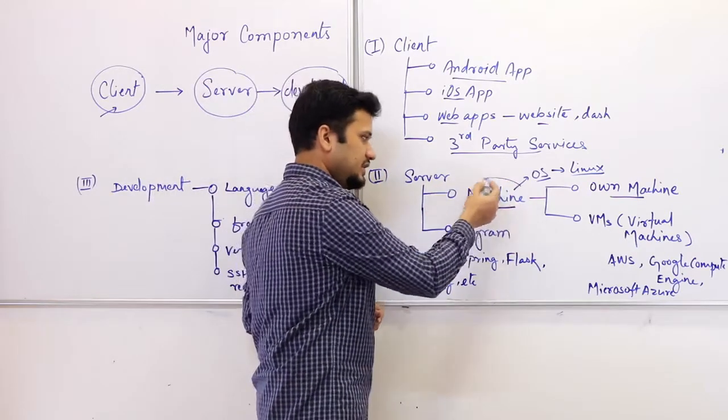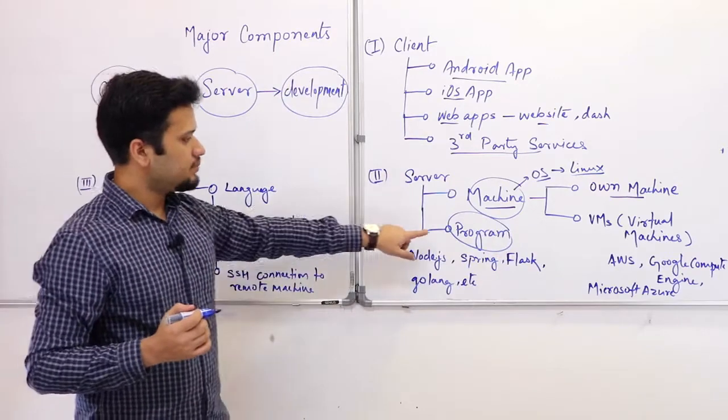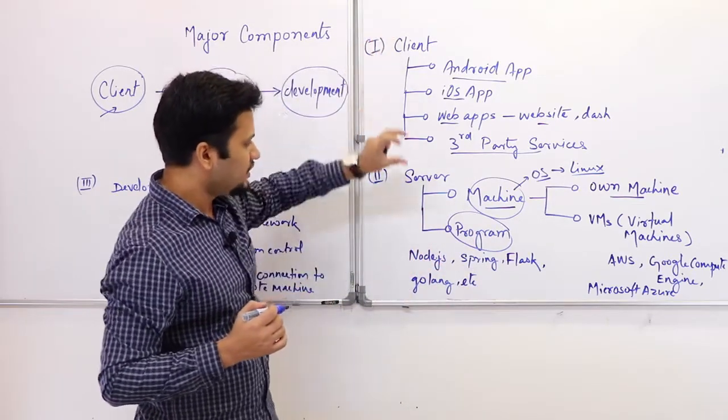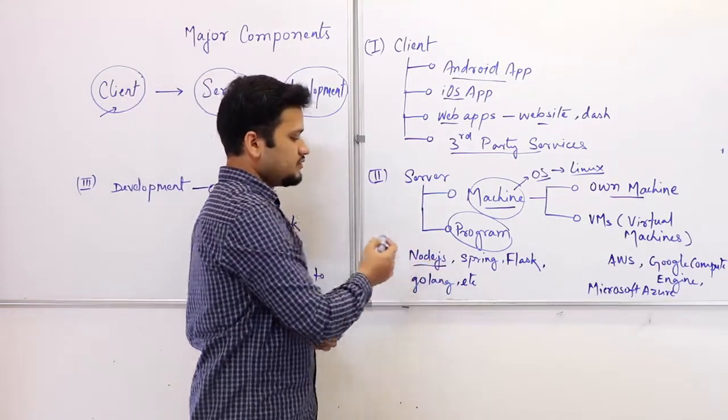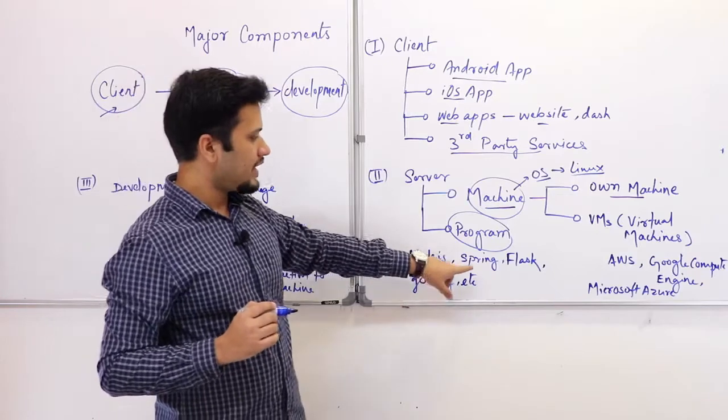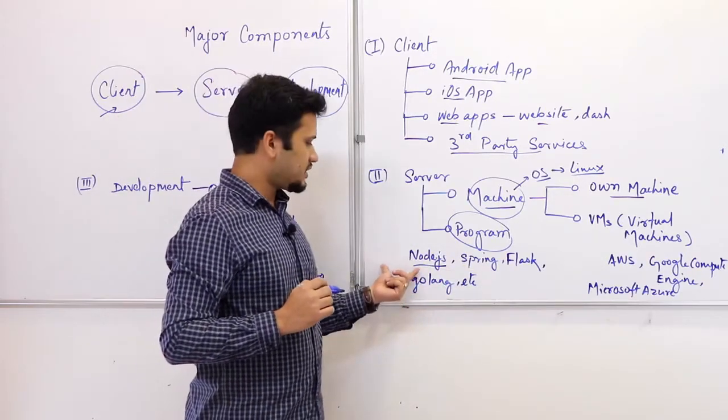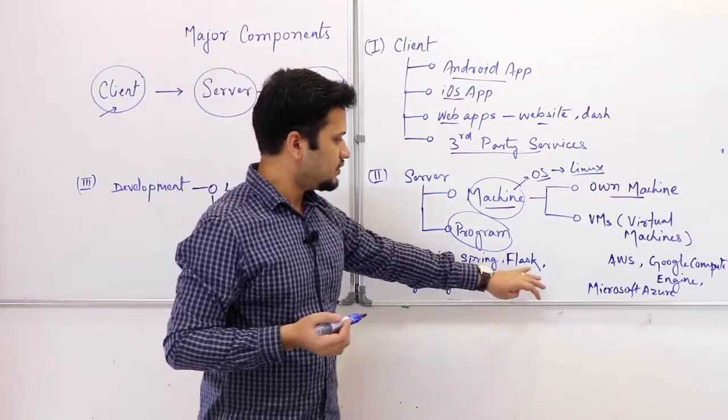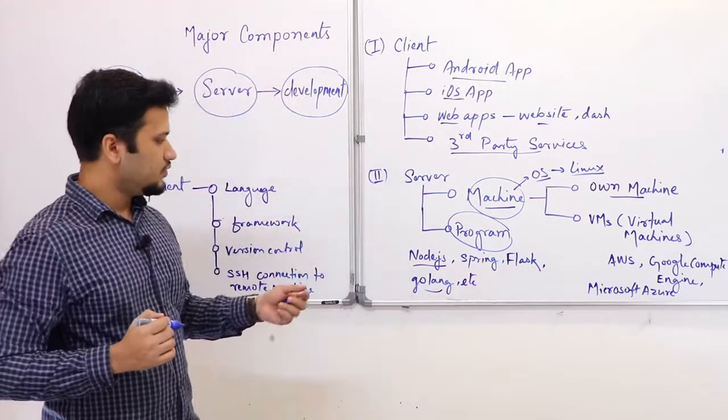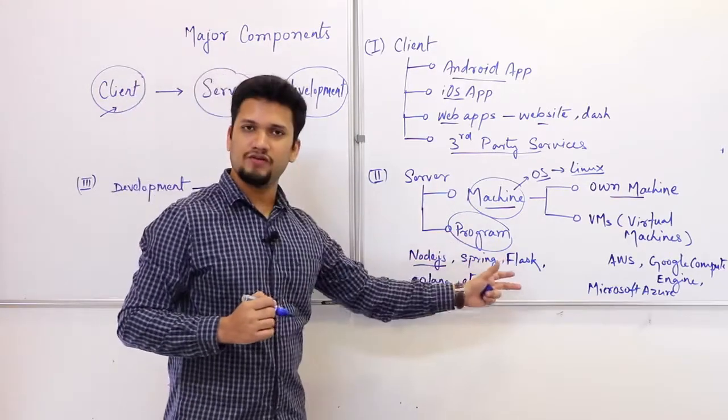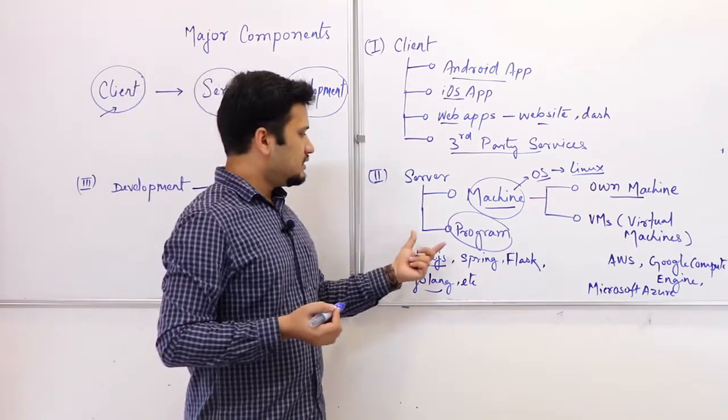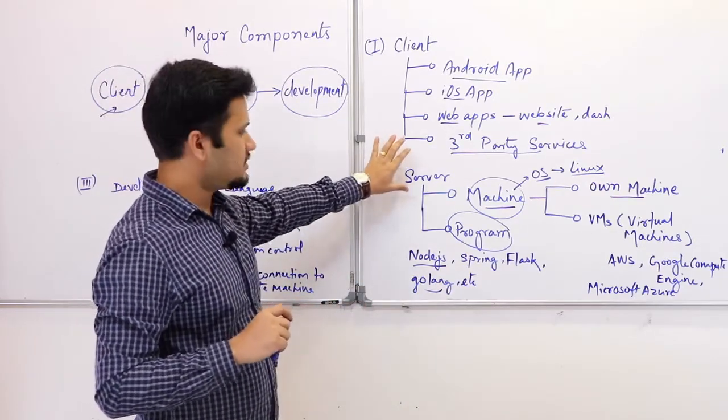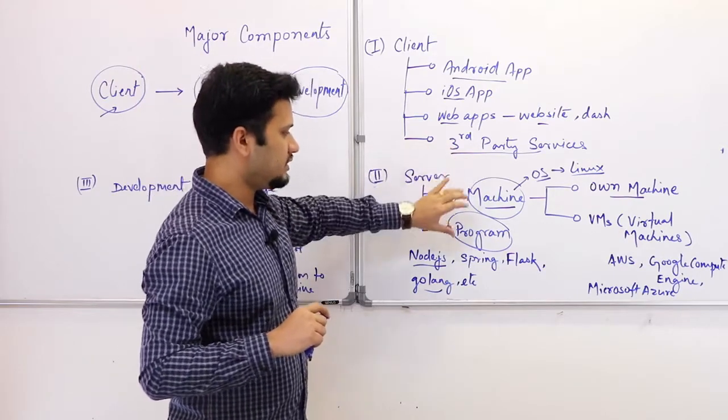Now in the server, in the machine you will have to run programs. These programs will be the server programs that will actually make this client communicate with the server. Options for the program you have is Node.js server, you can have Spring. Node.js is for JavaScript, Spring uses Java or Kotlin, Flask uses for example your Python, you have Golang now. You can develop your backend system backend programs in any of the frameworks that you are familiar with. The program is where we are going to write our logics. The second part we have to think for our system is the server, what type of machine and what program we are going to use.